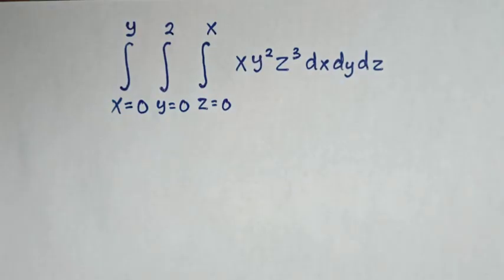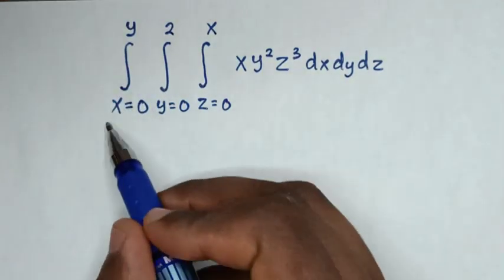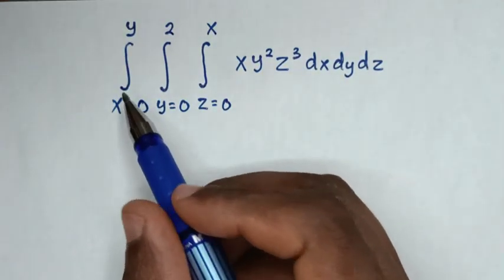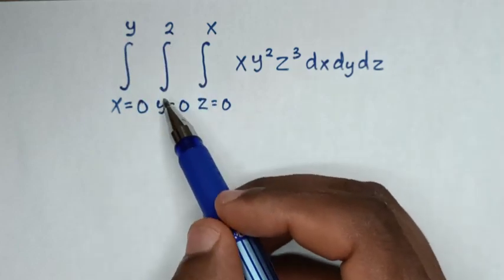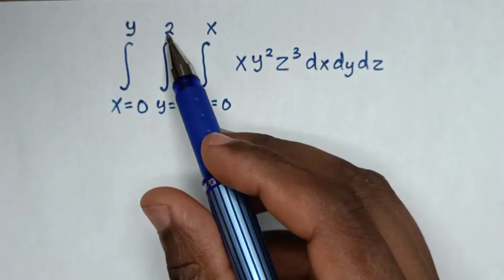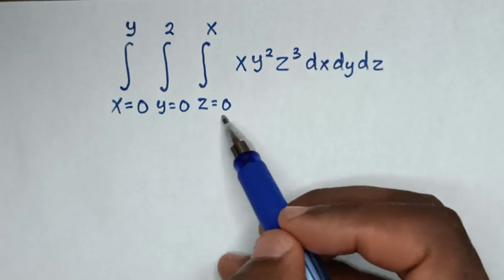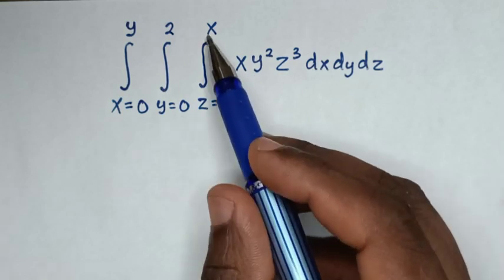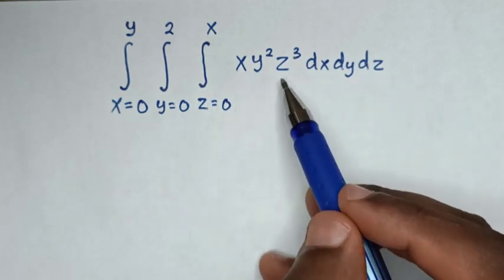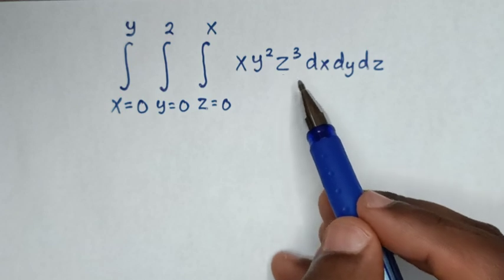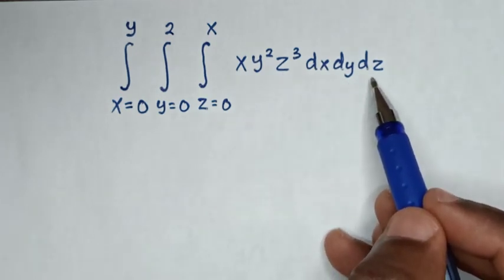Hello! How to integrate the integral from x equals 0 up to y, integral from y equals 0 up to 2, integral from z equals 0 up to x, of x y² z³ dx dy dz.